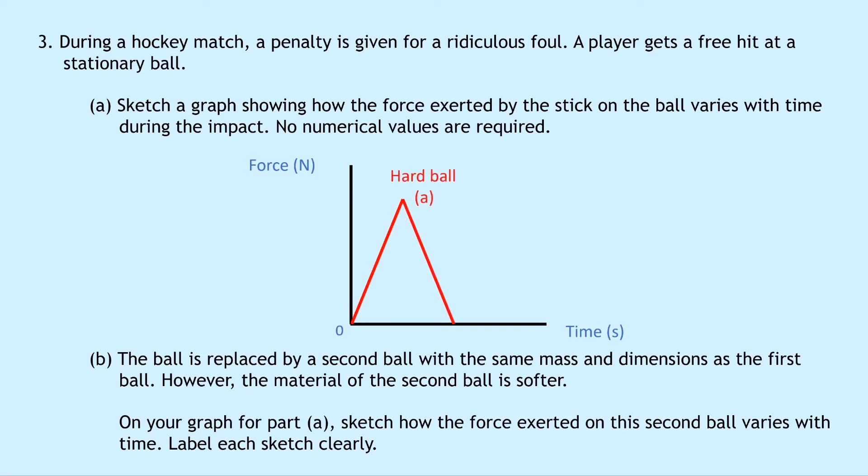Part b then says the ball is replaced by a second ball with the same mass and dimensions as the first ball. However the material of the second ball is softer. On your graph for part a sketch how the force exerted on this second ball varies with time. Label each sketch clearly. So we've already labelled the one for part a there quite clearly. And if we're using a softer ball we should expect a smaller average force over a longer time. So there's our smaller average force over a longer period of time. And remember when we're looking at a graph like this we can say the impulse is the same for each ball. The hard ball and the soft ball. Because the force multiplied by the time in each case would give you the same answer.